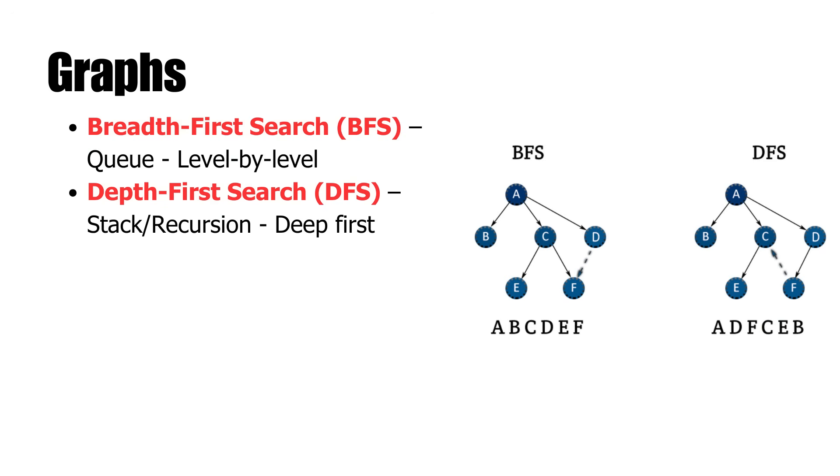Graph traversal is essential in exploring relationships. Breadth-first-search adopts the use of a queue to visit nodes level by level, while depth-first-search goes as deep as it can along an edge before reversing. Also, graphs support numerous algorithms like Dijkstra's for shortest path and topological sort for scheduling. Graph knowledge is essential in solving complex real-world problems involving relations and connectivity.